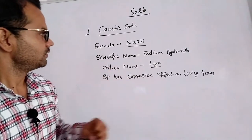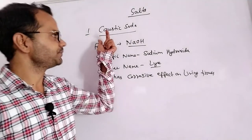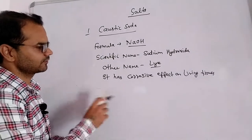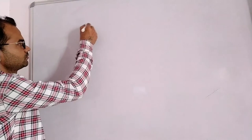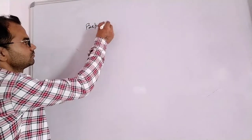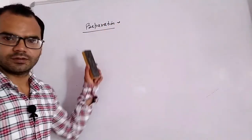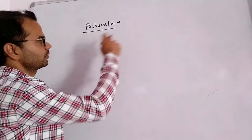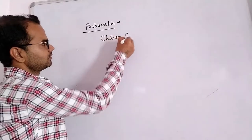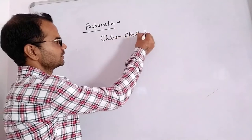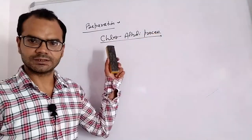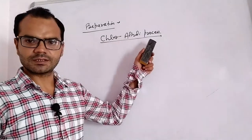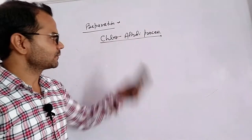Next is how to prepare caustic soda. Caustic soda is prepared by a process called the chlor-alkali process.